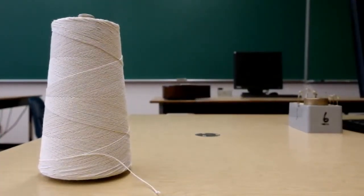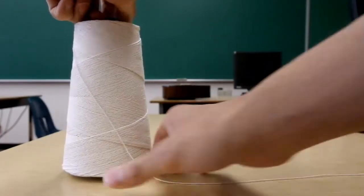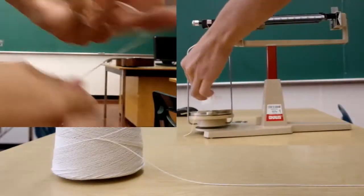So first off, you get a piece of string that's quite a bit longer than the length of the table. And then you do what you have to do to get the mass density of the string.